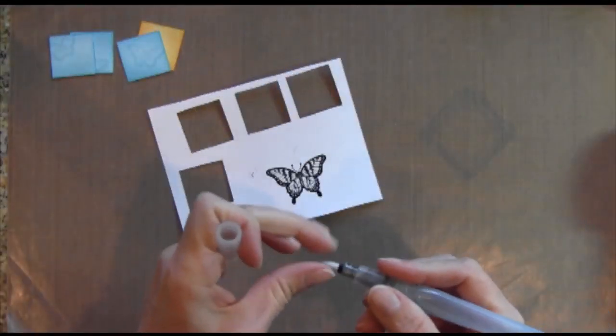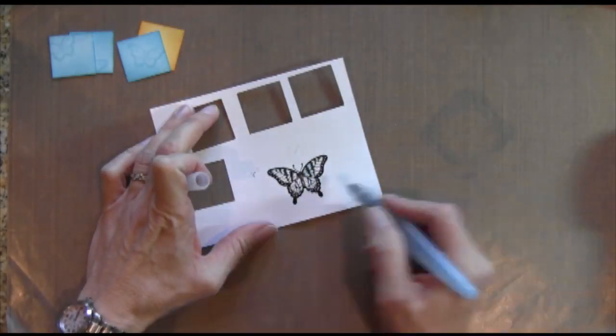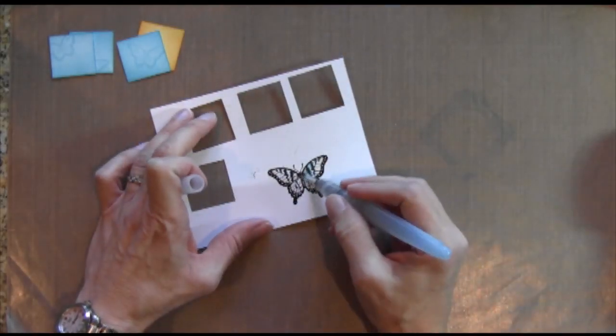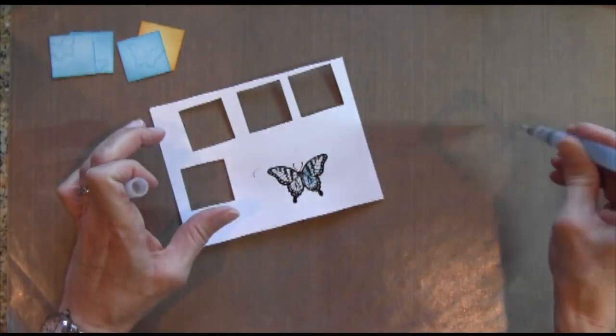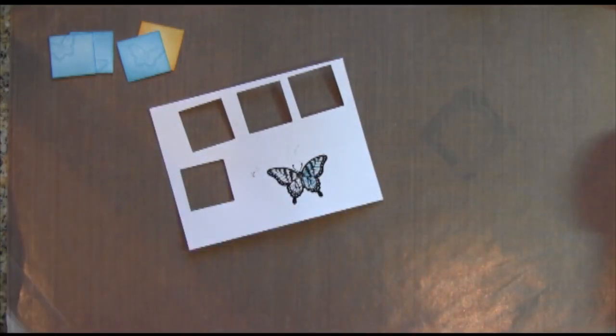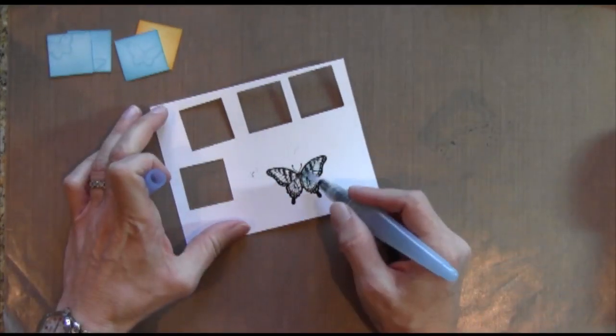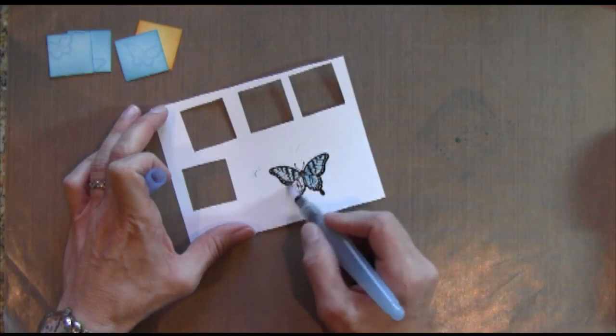Now I'm going to take that same color blue and my aqua painter and I'm just going to color this butterfly in. I had some trouble with my aqua painter. There's two in a pack and they're really old. I think I just need to get some new ones. But one had too much water and one didn't have enough water.